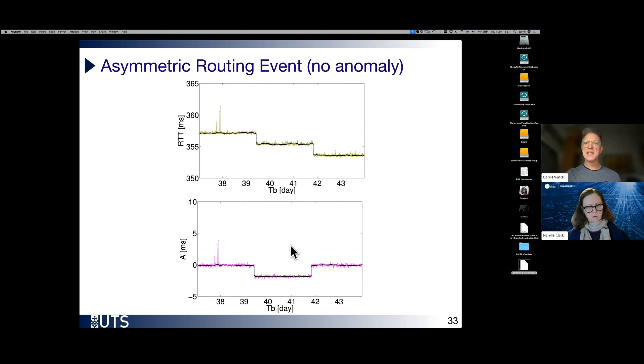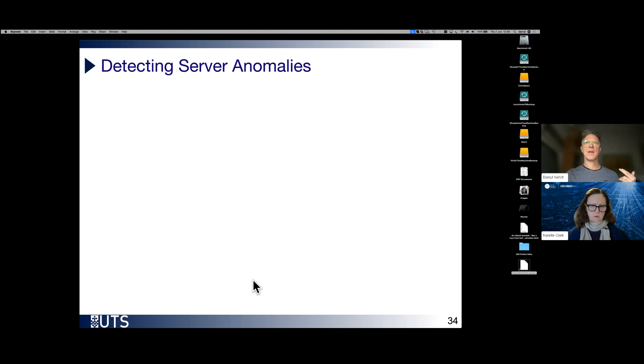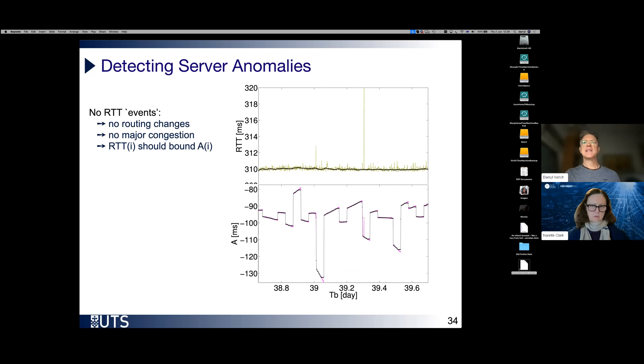Where now asymmetry has jumped down, but then later on jump back up to where it was. This is another scenario of what we might see. But here, we're seeing a change in asymmetry. That doesn't imply there's anything wrong with the server. We can understand why this occurred because of the changing path. So again, there's no anomaly in this case.